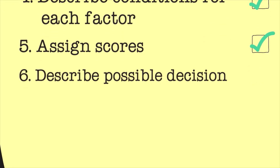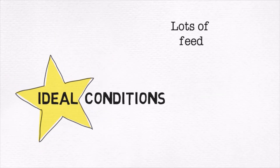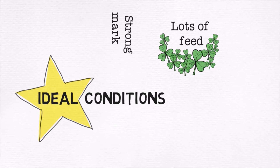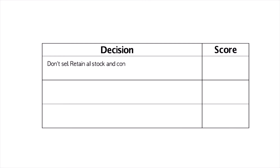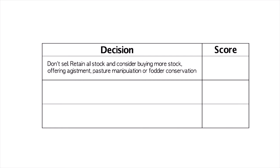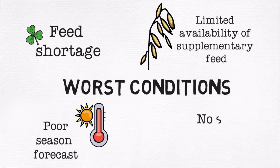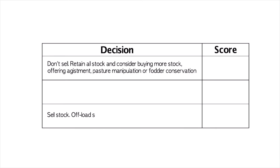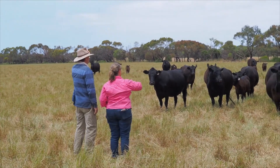Our next step is to decide on the possible decisions that we might make. Start with the extreme ends — from doing nothing to drastic action. If we had a lot of feed, market conditions were good, and the forecast was fine, our decision wouldn't be to sell stock — we might look at weed control or fodder conservation instead. On the flip side, if we had the worst possible conditions — not much feed, poor forecast, supplements hard to get, no soil moisture — then it's a pretty easy decision: sell some stock quite aggressively and reassess further down the track. Those two decisions bookend what you need to do, and then there may be some intermediary decisions in between.